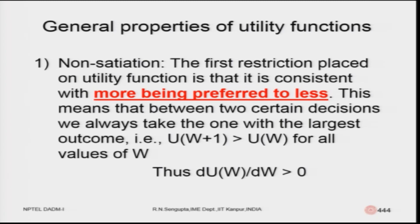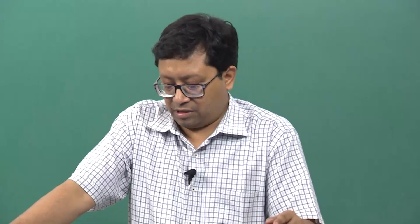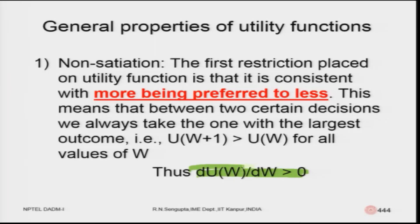Now we come to the important property of non-satiation. The first restriction placed on the utility function is that more is preferred to less — between two decisions, we will take the one with the largest outcome. As wealth increases, utility also increases. Mathematically, this means the first derivative of the utility function is greater than zero. This is the concept of non-satiation: the more I give you, the more you want.